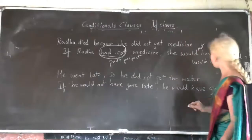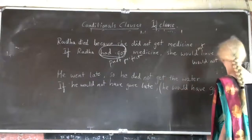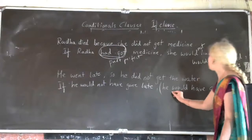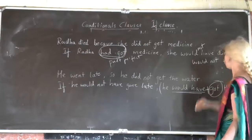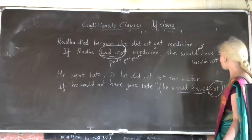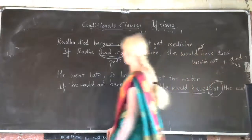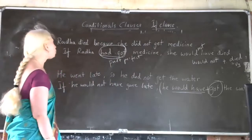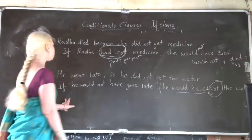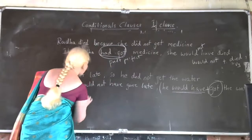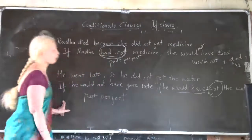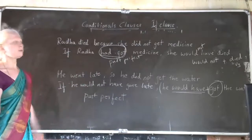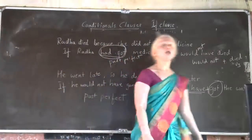He would have got the water. So in your main clause, you have used 'would have' — that is right — and with that you have used the V3 form of the verb, that is also okay. But come to your if-clause: 'If he would not have gone late.' In your if-clause, you have to use past perfect tense. Your main clause is right, but your if-clause is wrong. Can you correct your answer?